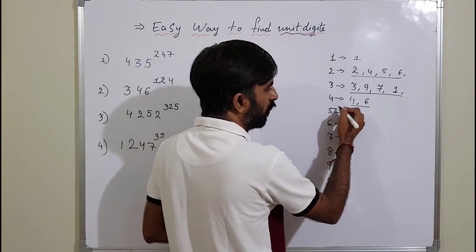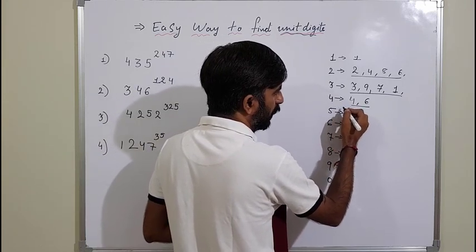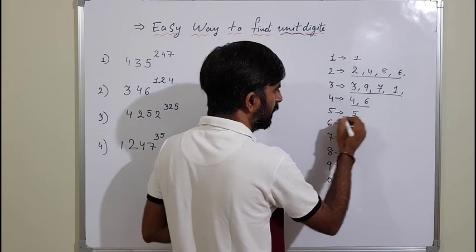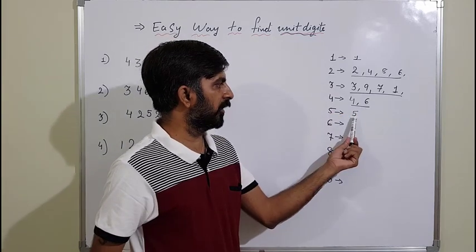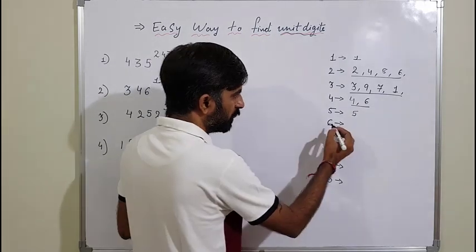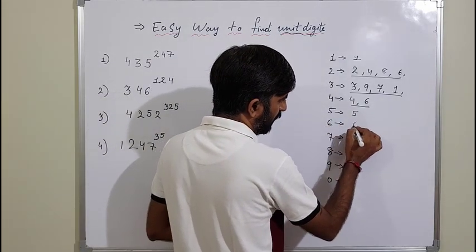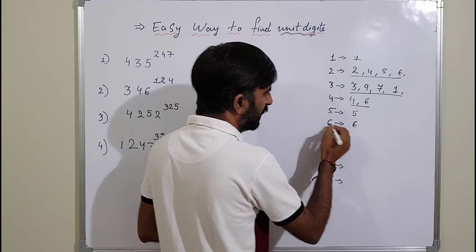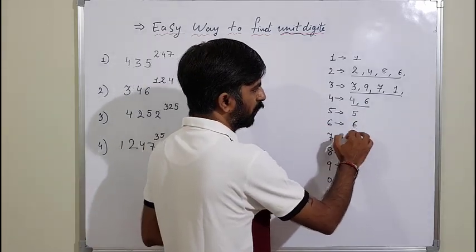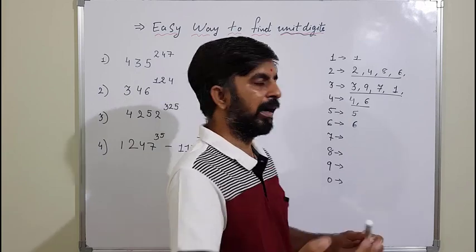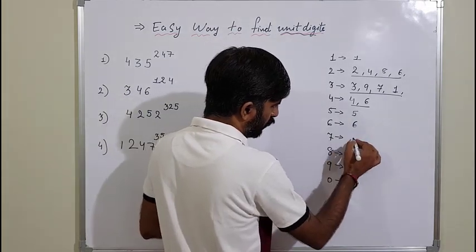For 5: 5 raised to 1 is 5, and 5 squared is 25, so unit digit is 5. So 5 raised to any power always gives unit digit 5. For 6: 6 raised to 1 is 6, and 6 squared is 36, so again unit digit is 6. In any power of 6, the unit digit is always 6.